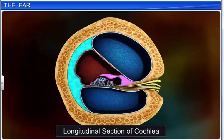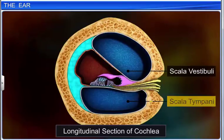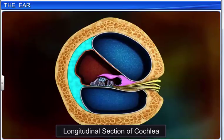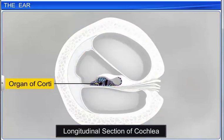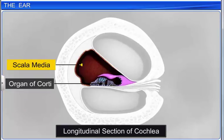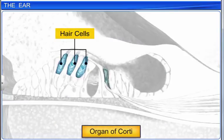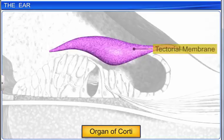The space between the scala vestibuli and scala tympani is called the scala media, and is filled with endolymph. The fluids in the labyrinth cushion the soft structures and conduct waves from the middle ear to the organ of corti. The organ of corti, located in the scala media, is the actual receptor of sound. It is composed of hair cells that act as auditory receptors. Above the row of hair cells lies a thin elastic membrane called the tectorial membrane.